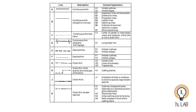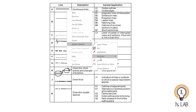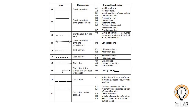Type H is a chain thin line that is thick at the ends and at changes of direction. You can see the chain line changes direction and its ends are thick. This type is used to represent cutting planes or section planes.